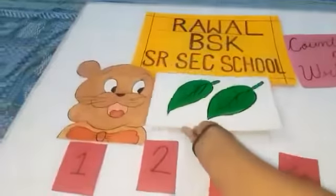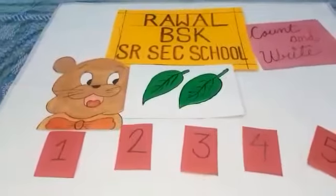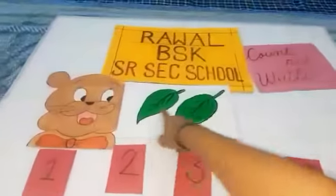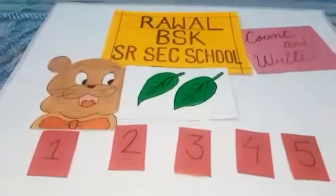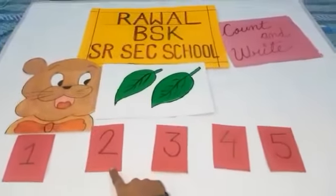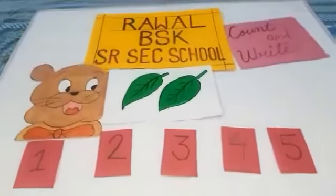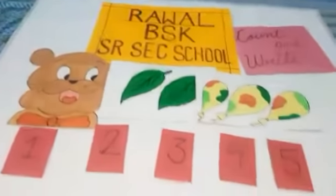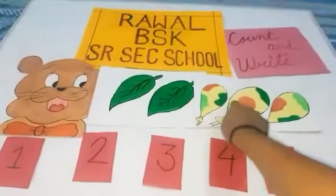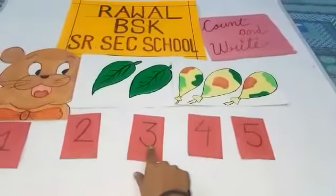How many leaves are there? Let's count — one, two. Where is two? Yeah, this one is two. So we have two leaves. How many balloons are there? Very good — one, two, three. We have three balloons.